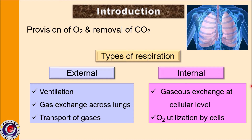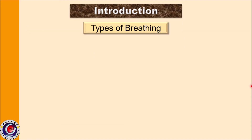Once oxygen reaches the tissues, it will be taken up by the cells and utilized to produce energy, that is ATP. As a by-product, there will be formation of carbon dioxide. This carbon dioxide in turn will enter into the blood at the level of tissue. This gaseous exchange at the level of tissues, as well as the utilization of oxygen to form carbon dioxide, are part of internal respiration.